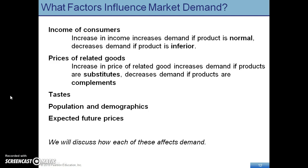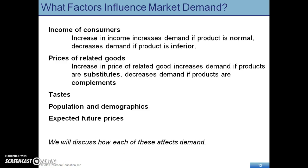One of the reasons is income of consumers — if consumers' income increases, demand will increase. Another factor is prices of related goods, where we look at substitutes and complements. With substitutes, if more substitutes are available and their prices increase, we'll buy the actual product instead. Complementary goods are two goods that go together, like peanut butter and jelly — if the price of peanut butter increases, we won't buy peanut butter, and so we probably won't buy jelly either. Other factors include taste, which is influenced by how consumers respond to changes in prices.